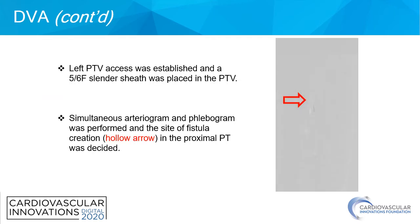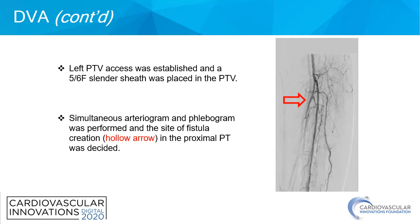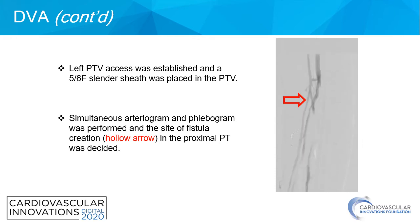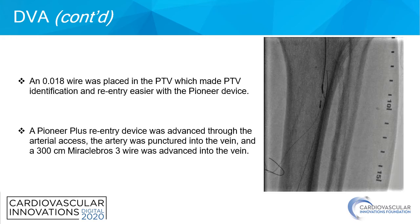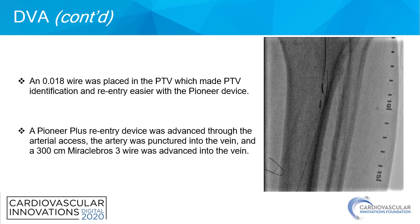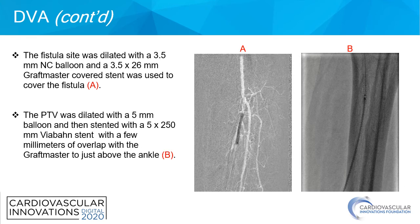Left posterior tibial vein axis was established and a 5-6 French slender sheath was placed in the posterior tibial vein. Simultaneous arteriogram and venogram was performed at the site of fistula creation, and the proximal posterior tibial vein was selected. An 0.18 wire was placed in the posterior tibial vein which made identification and reentry easier with the Pioneer device. A Pioneer Plus reentry device was advanced through the arterial axis and the artery was punctured into the vein. The fistula site was dilated with a 3.5 mm NC balloon and a 3.5 x 26 mm covered stent was used to cover the fistula.